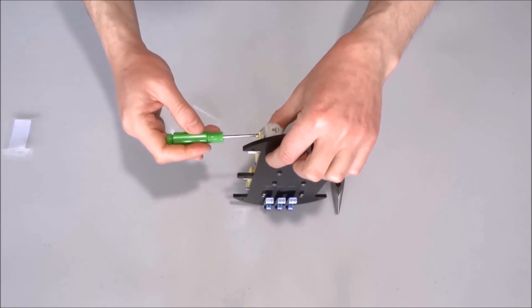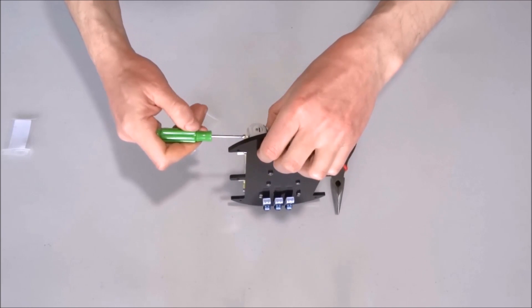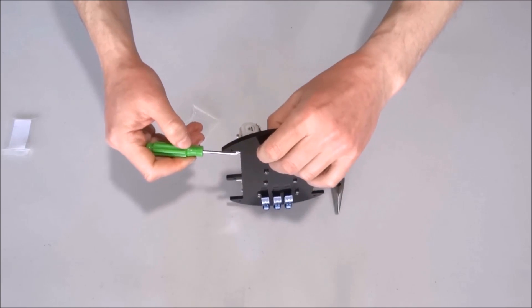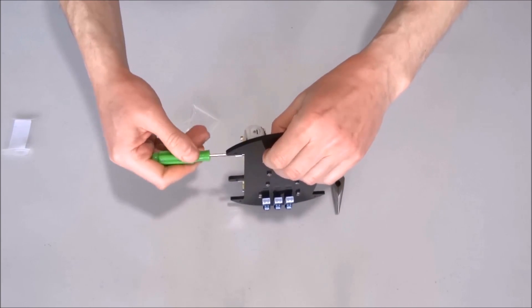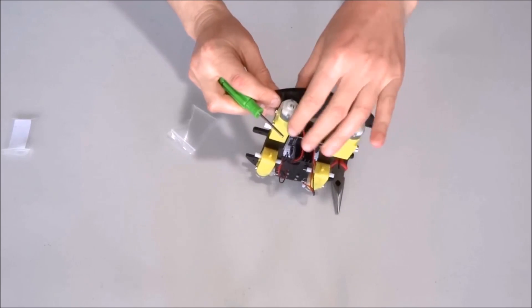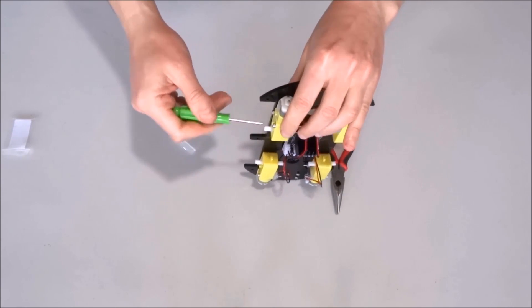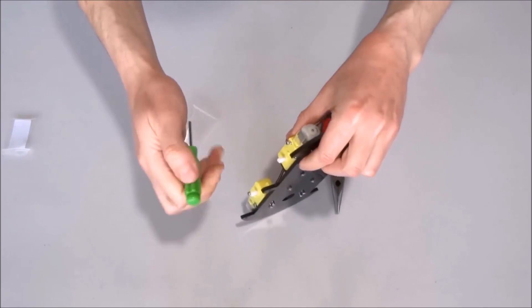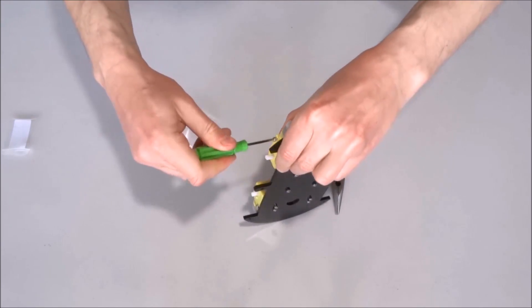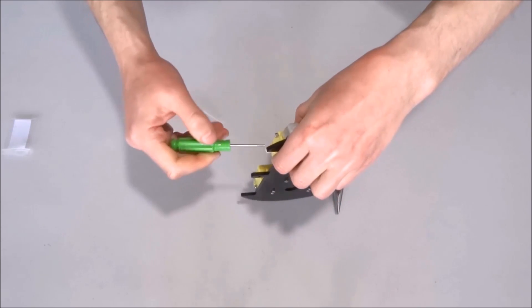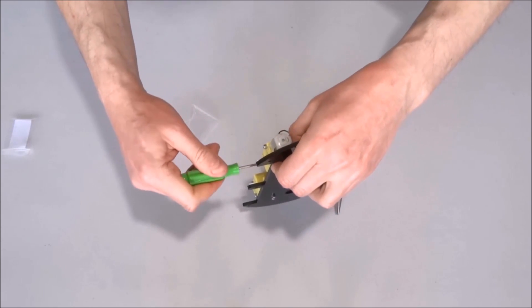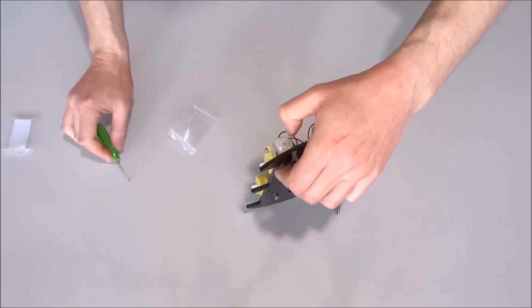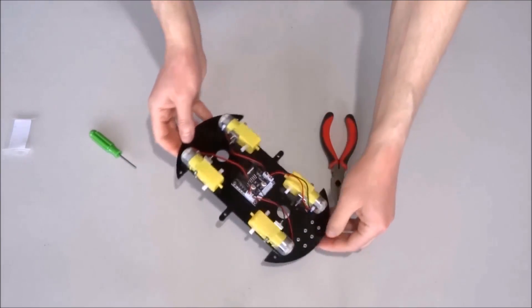And this pretty much should be all that we need to do on the bottom chassis. To have easy access for now I will not mount yet the wheels of the robot. We'll mount the wheels at the very end.